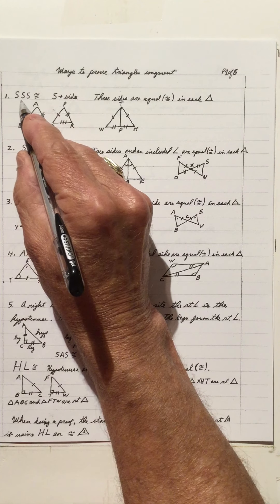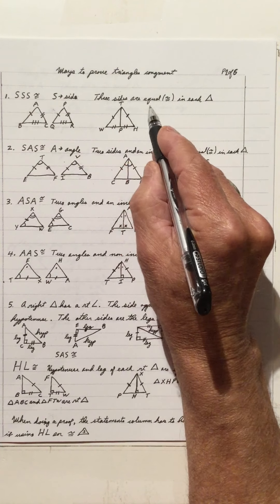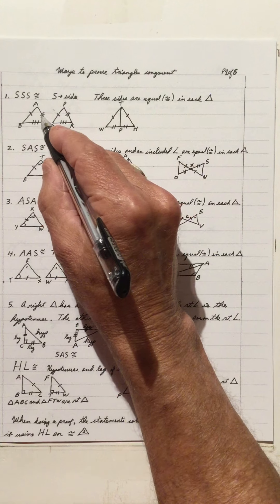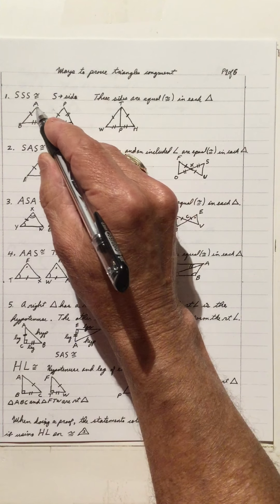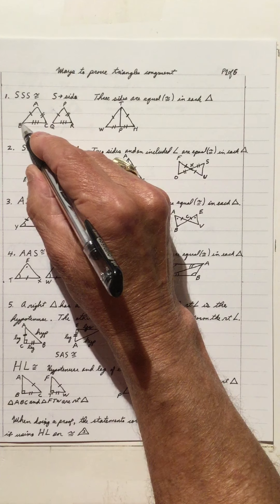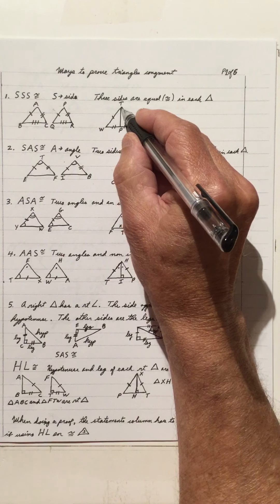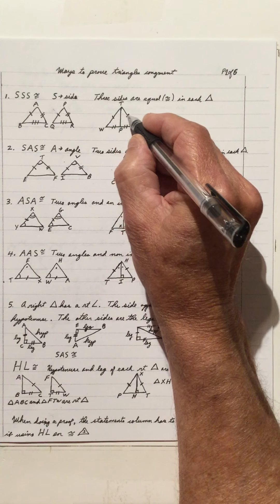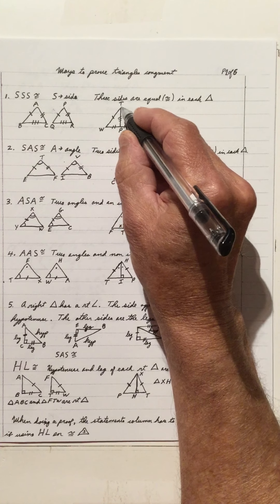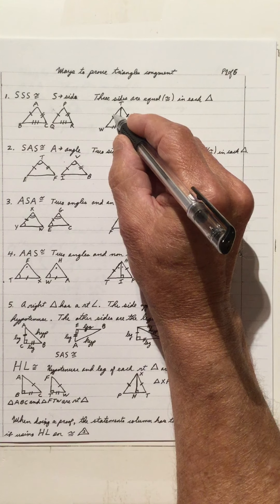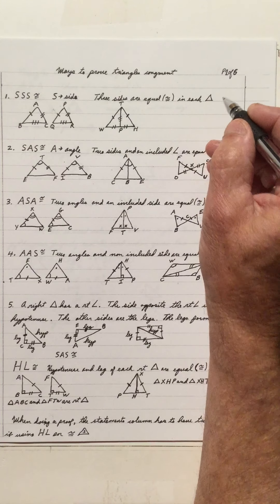One way is SSS congruency. S stands for sides, so three sides are equal in each triangle. Notice AB equals PQ, AC equals PR, and BC equals QR. Two sides are marked equal here, these two sides are marked equal, and the third side is common, which is PT — so it's an SSS. Two triangles are congruent: side, side, side.